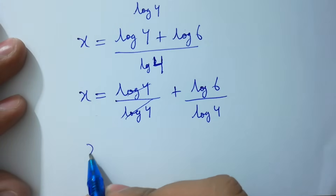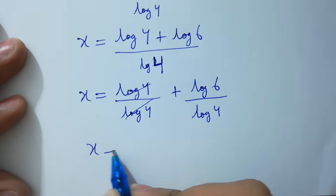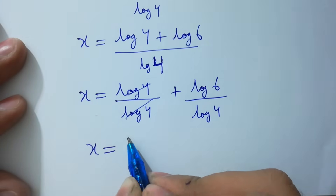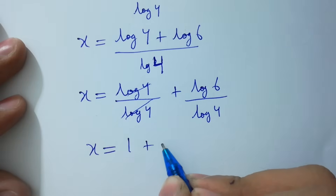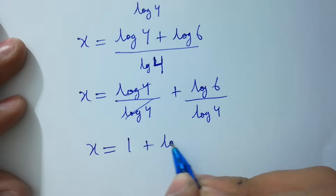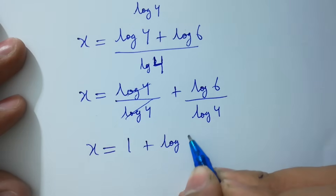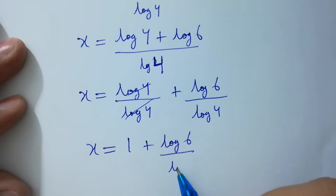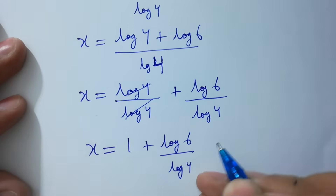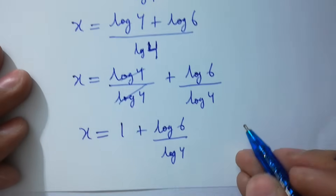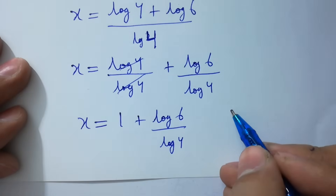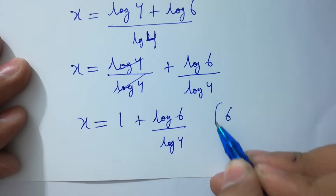We have x equal to 1 plus log 6 over log 4.